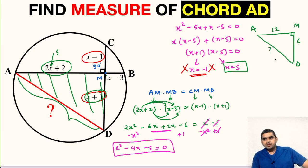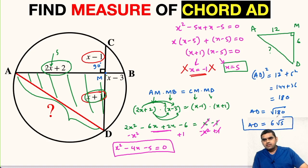We will use Pythagorean theorem here. So we will get AD squared, that is square of hypotenuse, equals 12 squared plus 6 squared, 144 plus 36 equals 180. So AD will be equal to square root of 180 and this will be 6 root 5 units. So we have found the measure of this chord AD as 6 root 5 units.